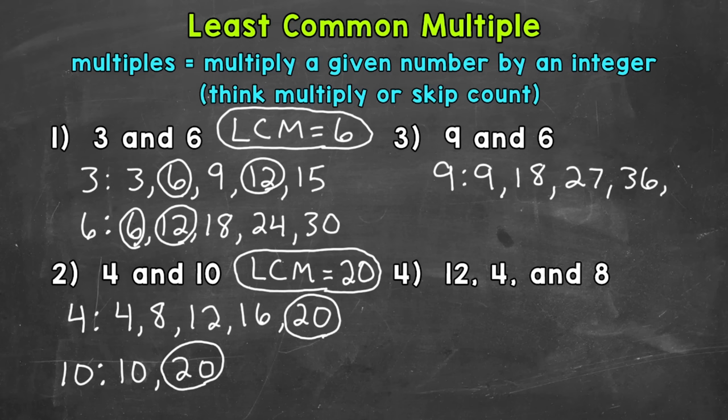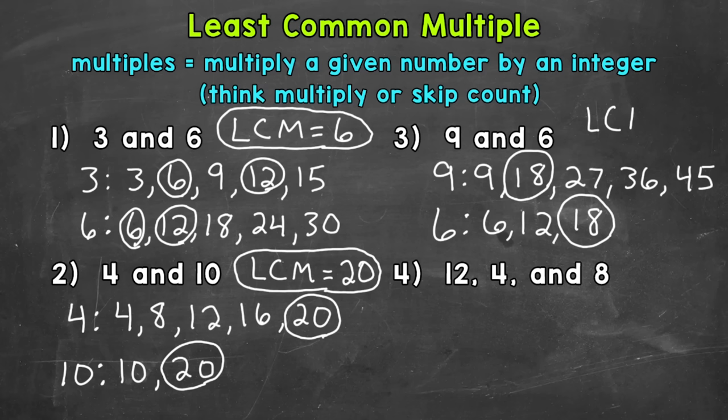And now some multiples of six. Six, 12, 18. And we have our least common multiple right here, which is going to be 18. So our LCM equals 18.